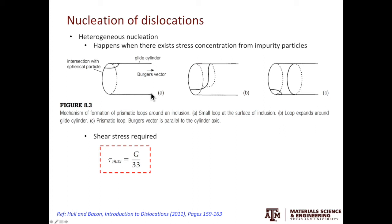When applying a large shear stress, a dislocation can nucleate at the interface of the particle and the material as shown here. And this dislocation can grow along this glide cylinder and eventually form a dislocation loop. And there is a special name for these dislocation loops called prismatic loops.